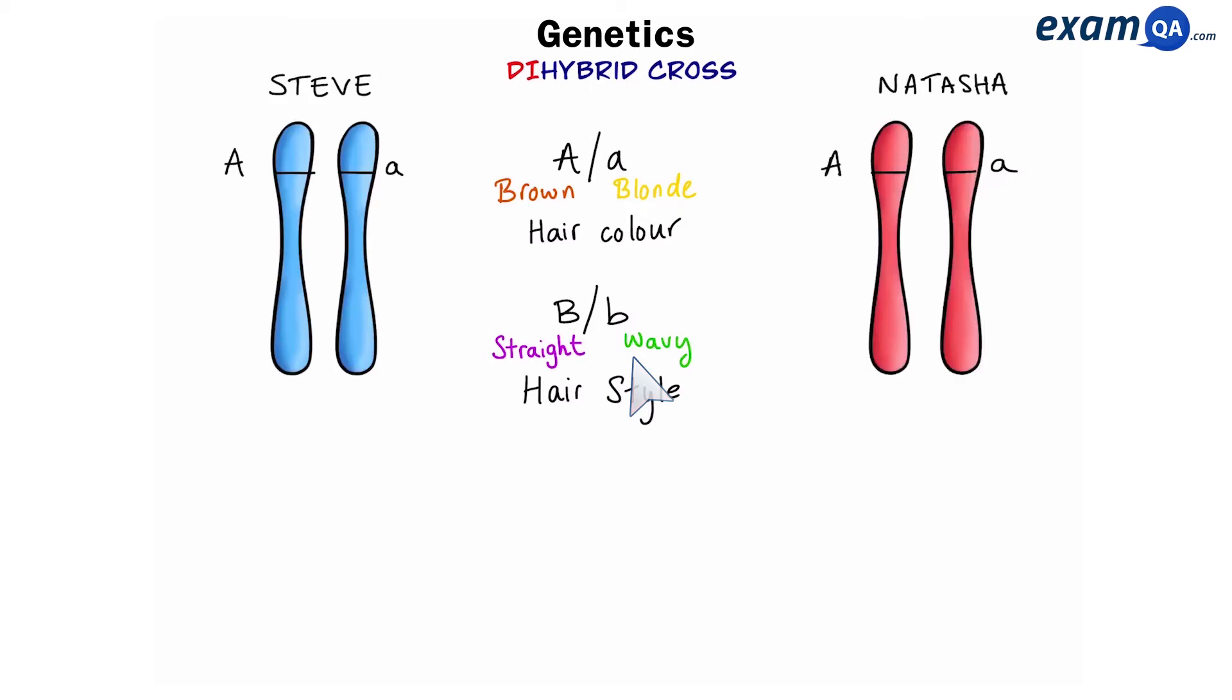Okay, so Natasha and Steve again, but this time we're going to put both genes in the chromosomes. That gives us the following genotypes for both individuals. Let's describe their phenotypes. We'll start with Steve. So overall, A is dominant, meaning he's going to have brown hair, and B is dominant, meaning that he's going to have straight hair.